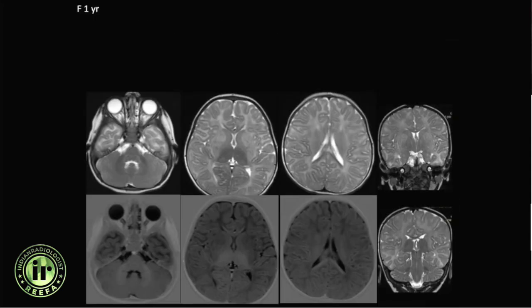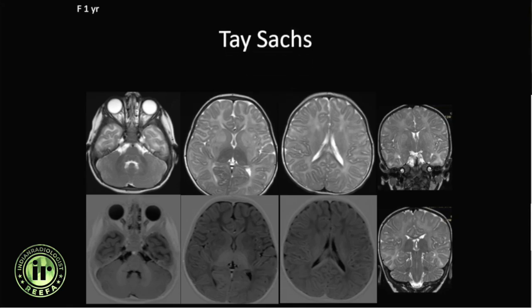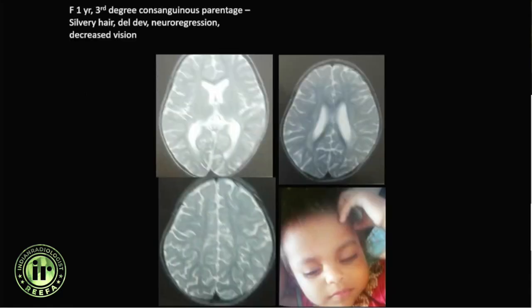A one-year-old child showed diffuse abnormality in the basal ganglia as well as hypointense signal in the thalami. This is Tay-Sachs syndrome — GM2 gangliosidosis.